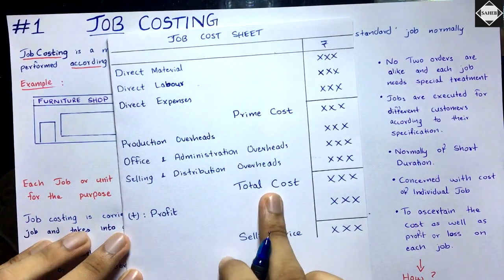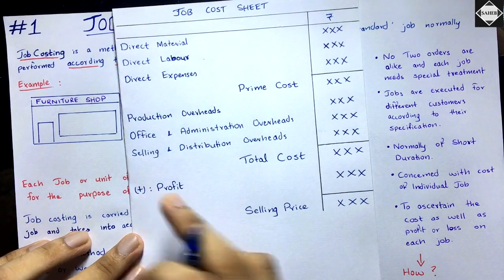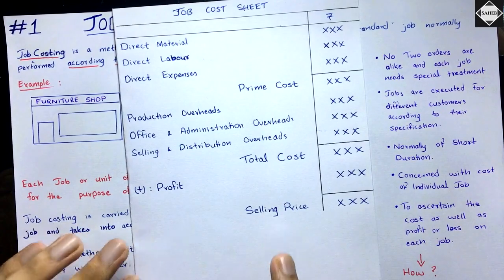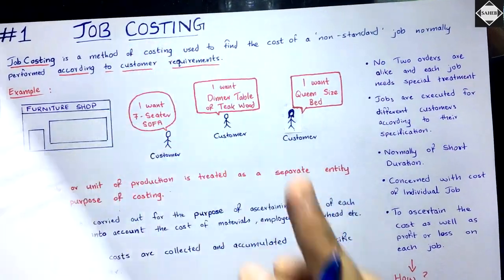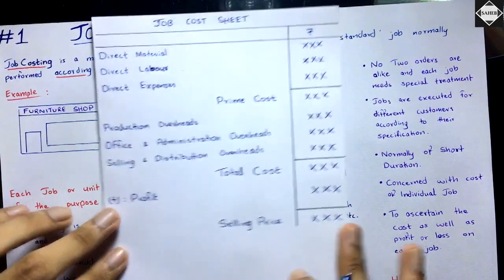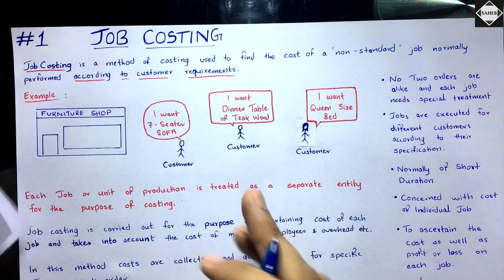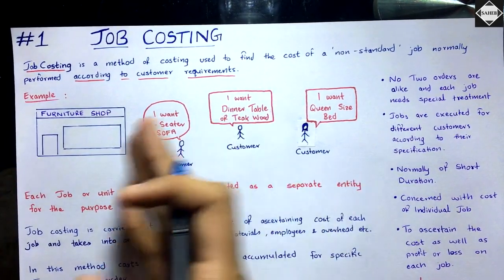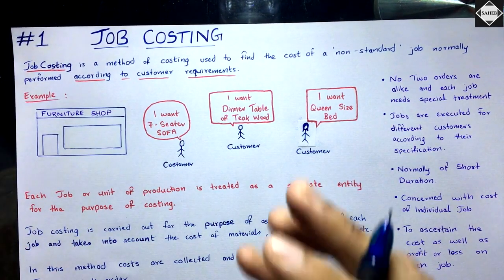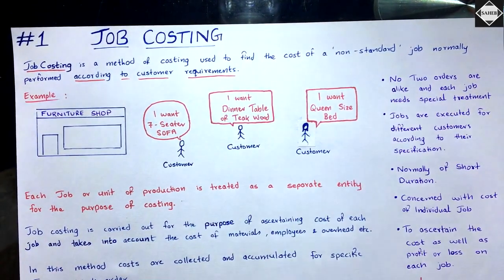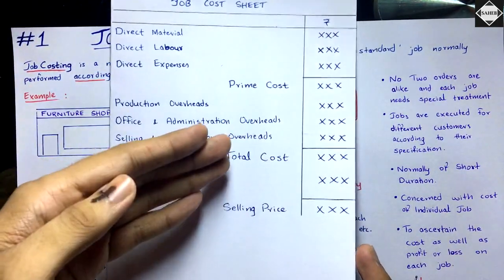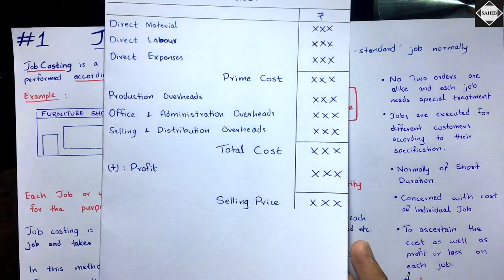Once you have the total cost, you add a certain profit margin percentage to arrive at the selling price. We do job costing to calculate the profit on each job and determine the selling price — because the customer's specifications are different each time, so we must consider all their requirements, calculate total cost, add profit, and get the selling price.